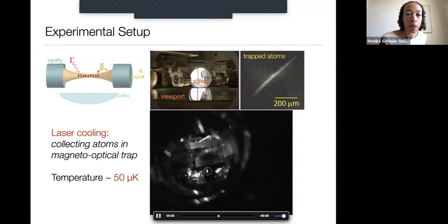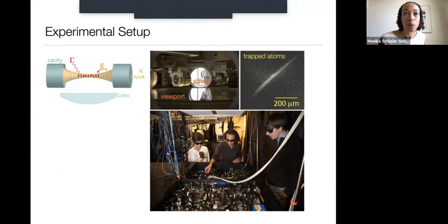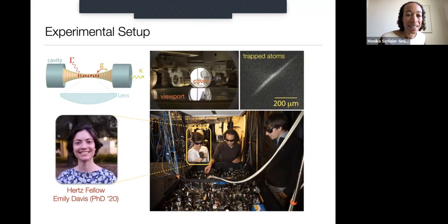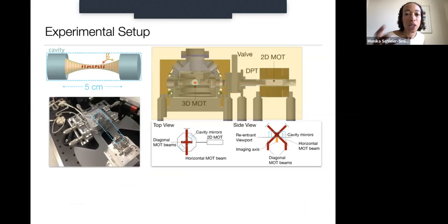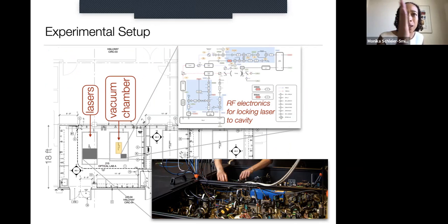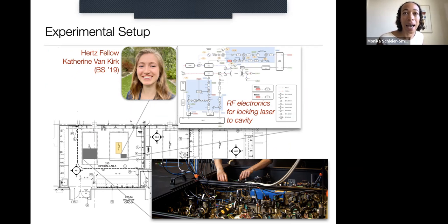This setup was designed and built by graduate students, including Emily Davis — a Hertz Fellow who recently received her PhD and is now a Miller Fellow at UC Berkeley — who had to think about all aspects of designing a vacuum-compatible, mechanically stable resonator that brings light to a tight focus, along with the entire vacuum system, laser system, and electronics to keep lasers at exactly the right frequency. Katherine van Kirk, a new Hertz Fellow and now a PhD student at Harvard, also worked with me on the laser system.